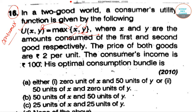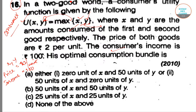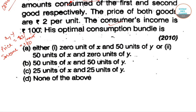Both goods x and y have a price of 2 rupees per unit. So you have to pay 2 rupees for both. And the consumer's income is 100. We will find out which bundle will be optimal for the consumer.